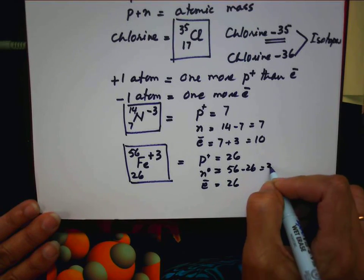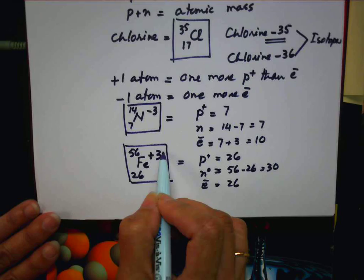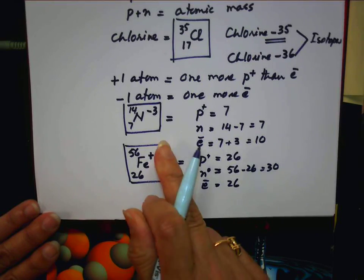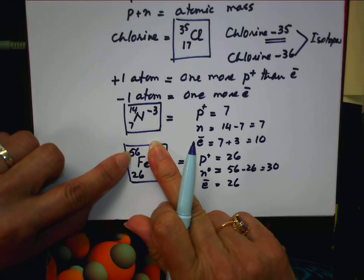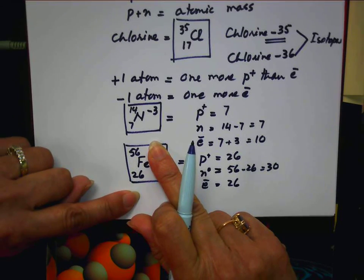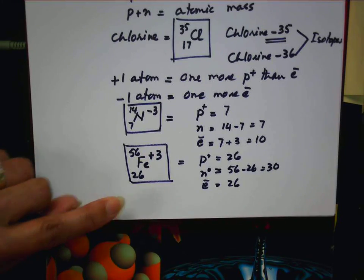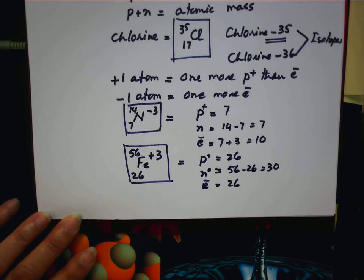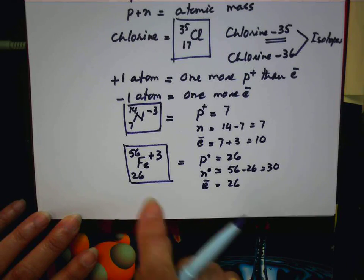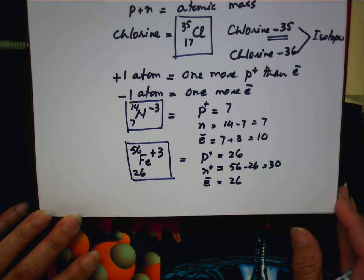Thirty neutrons. But this is plus three here. Plus three doesn't mean it should not interfere with the atomic mass or atomic number. Plus three means the electrons are leaving that atom, losing atom. So how many electron does it lose? Three. Three.